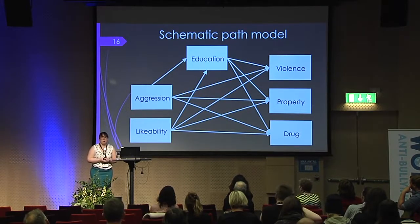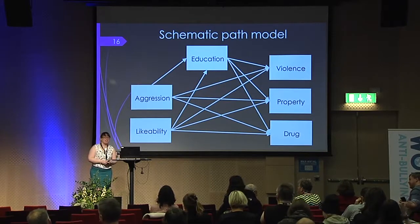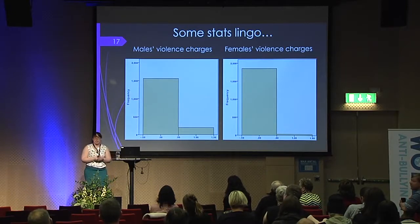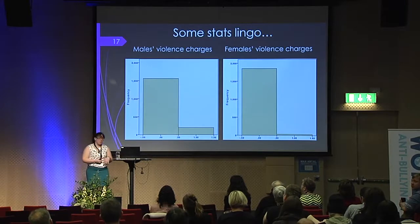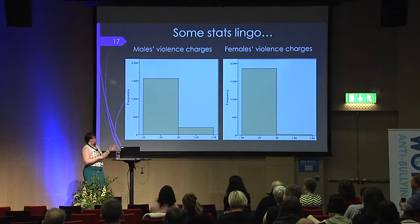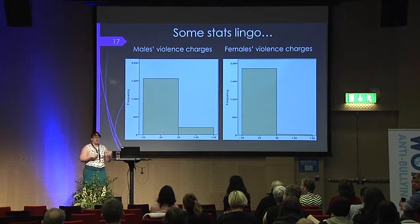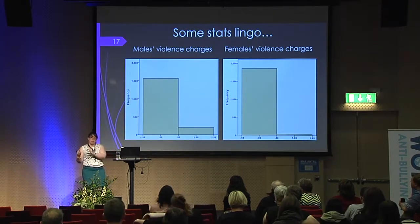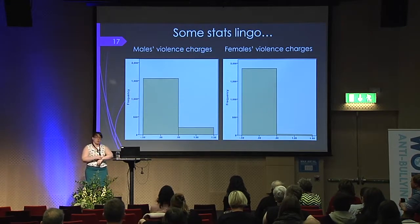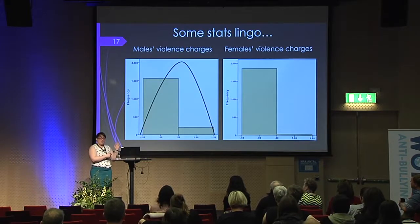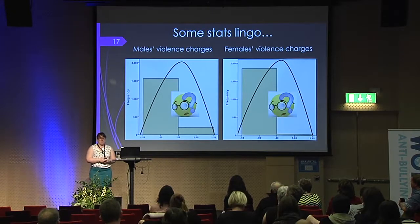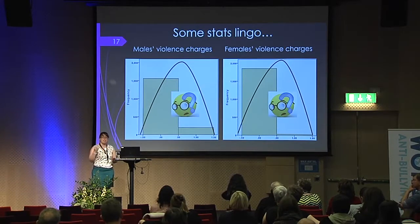Before I get into some statistics, by a show of hands, who has heard of causal mediation based on counterfactuals? Just briefly, I'll tell you why it's important to think about mediation in a different way. In my data, I have what is called a zero-inflated distribution. For violence charges — males on the left, females on the right — you see a lot of zeros and not very many ones. That is what we would expect and is also the case in the population. When you do normal mediation, it estimates a continuous outcome, and that's a problem when you have binary data like this. I chose to do causal mediation based on counterfactuals because it maintains the binary nature of the outcome, and that is why we get odds ratios for the effects.